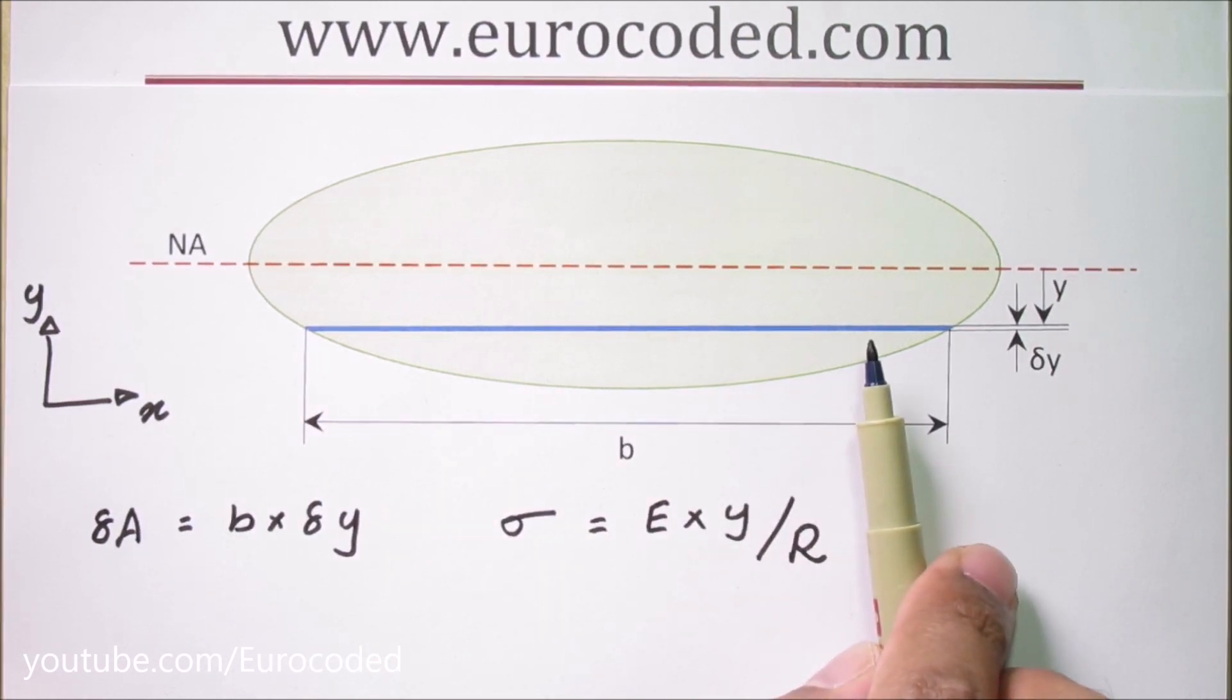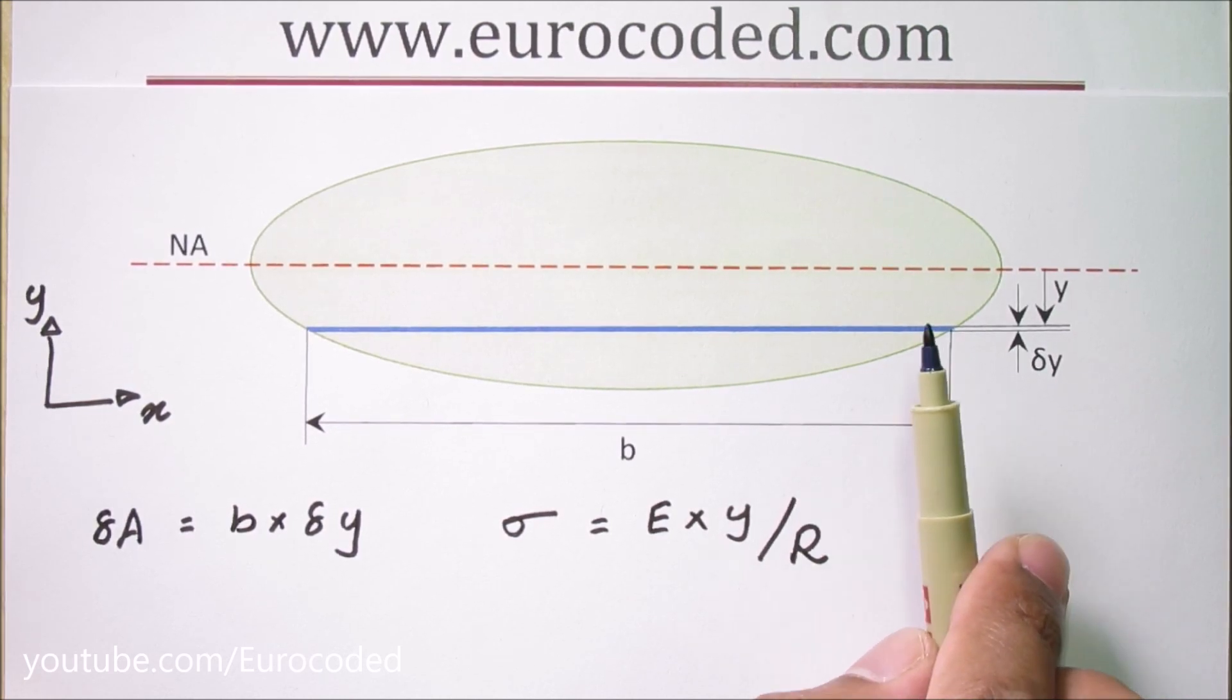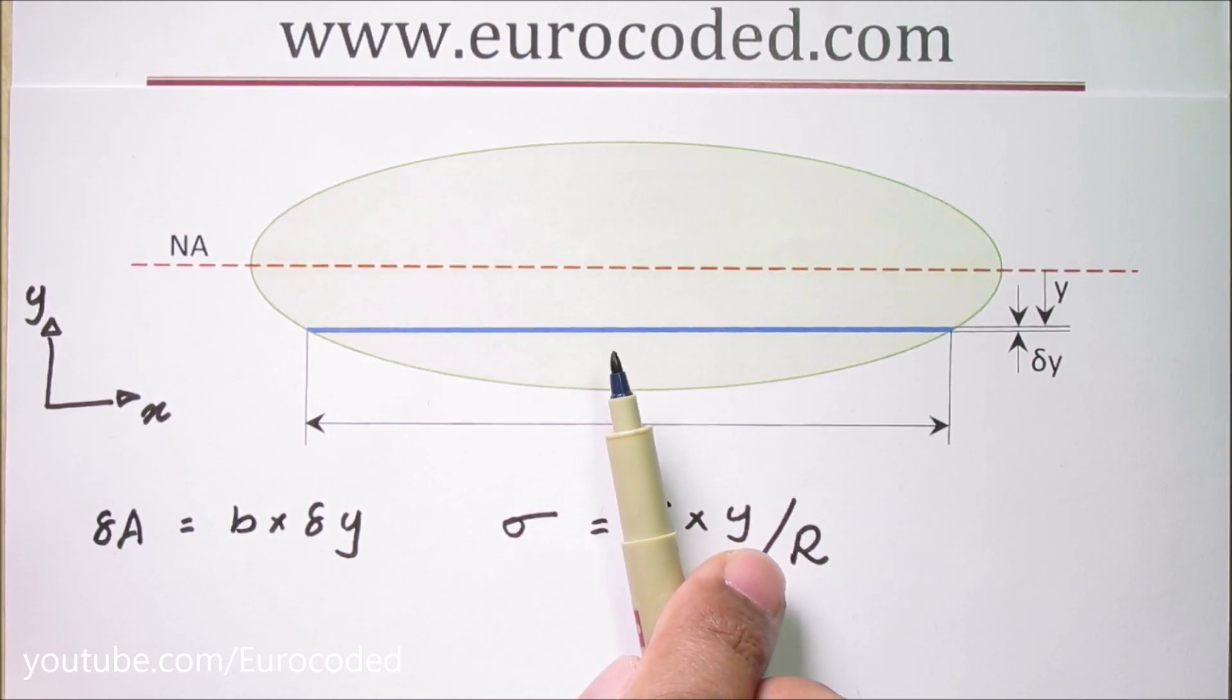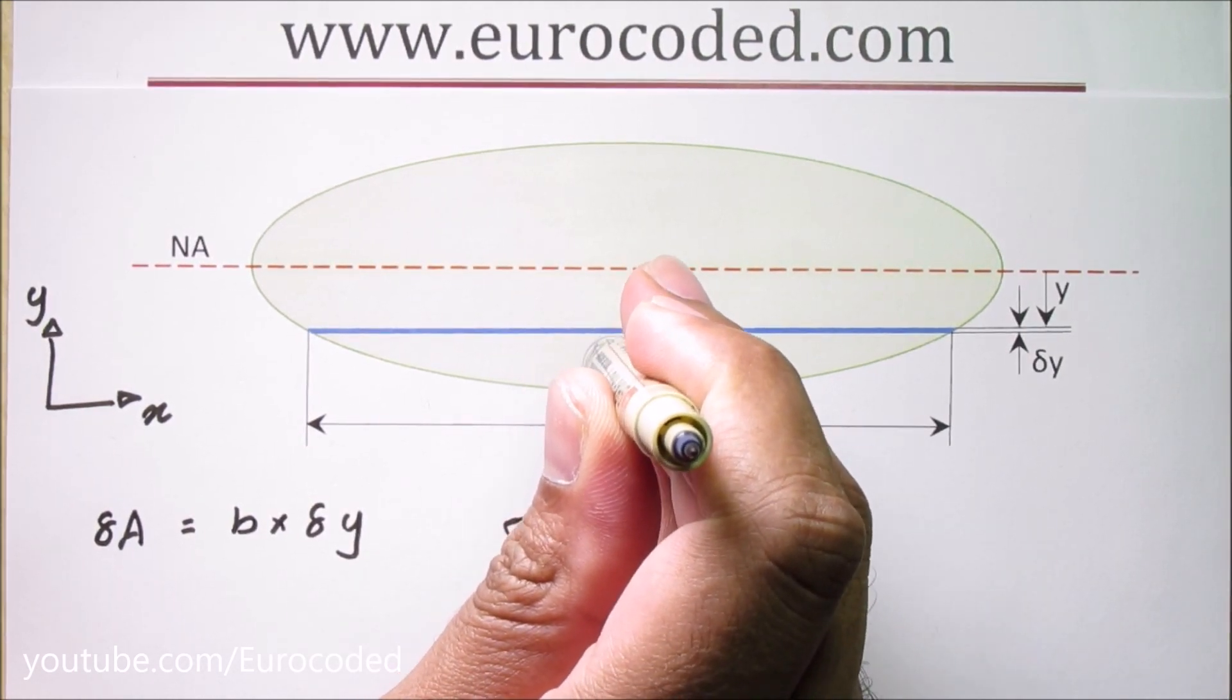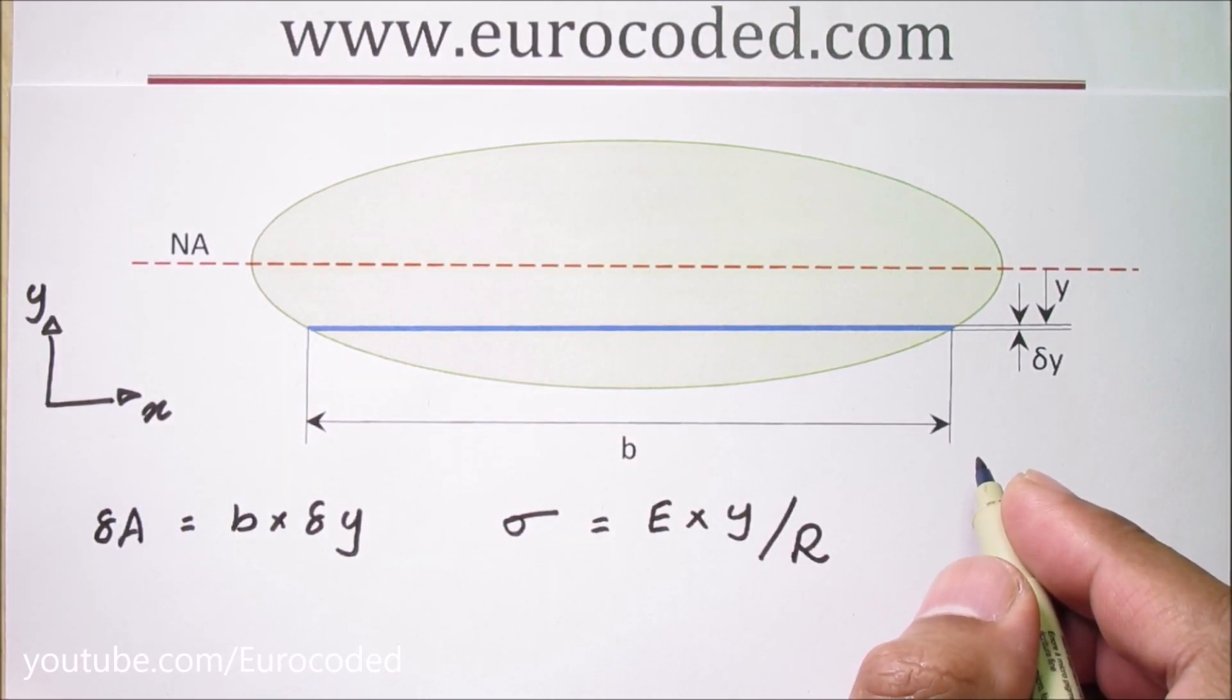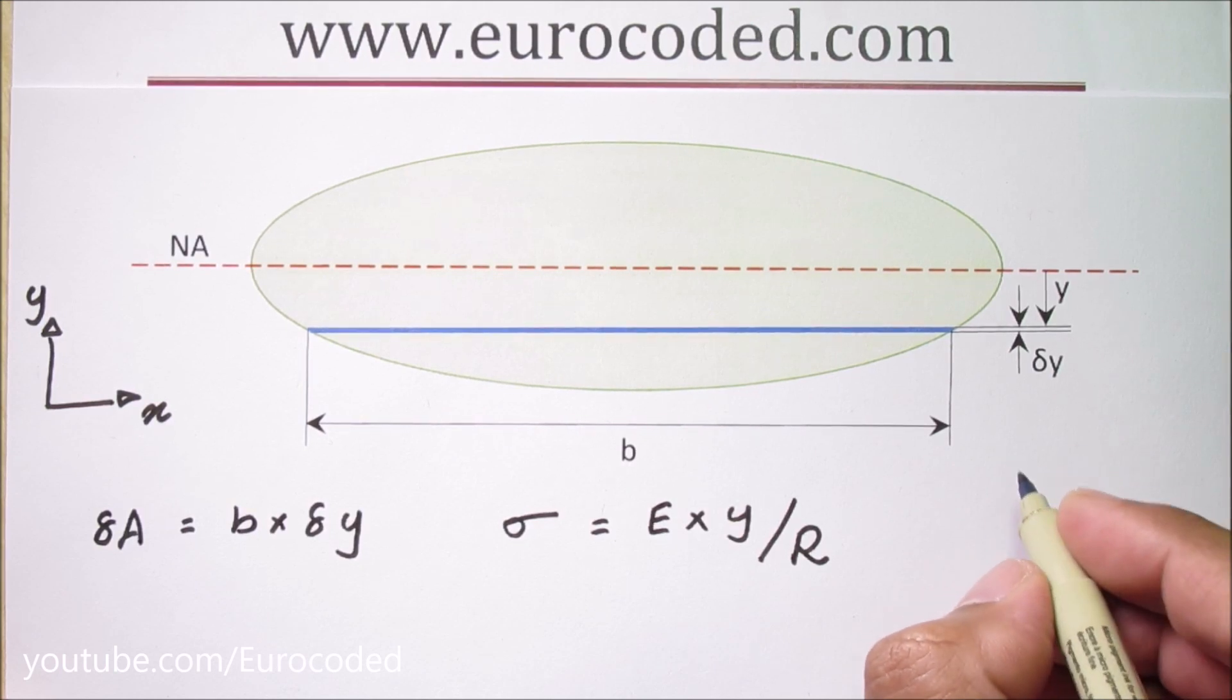This very small strip we are considering is in tension in our arrangement and it is stretched or elongated. This tensile stress is caused by a very small force, let's say delta F force acting normal to the section. This delta F force is a small element of the total force. We know that the stress is equal to force over cross sectional area.